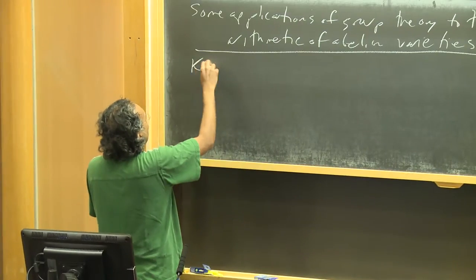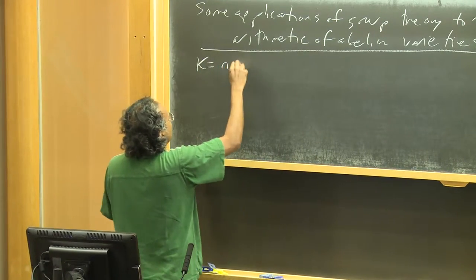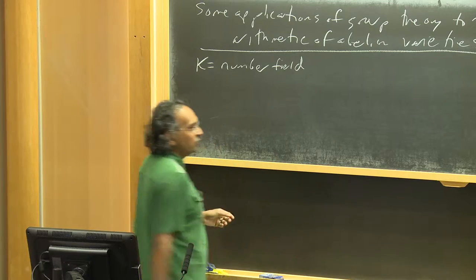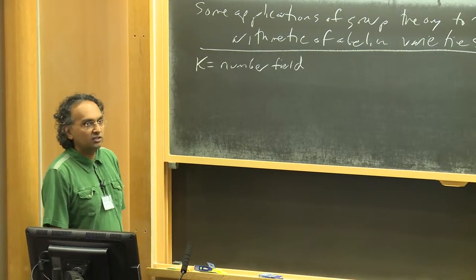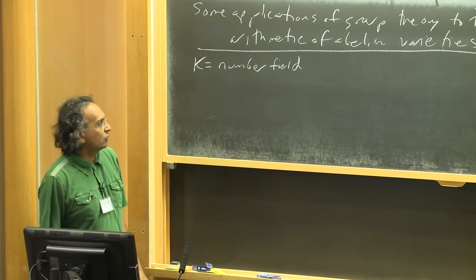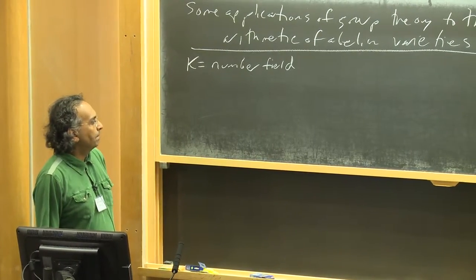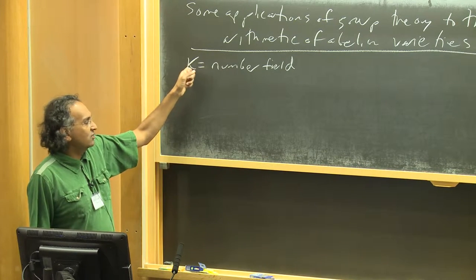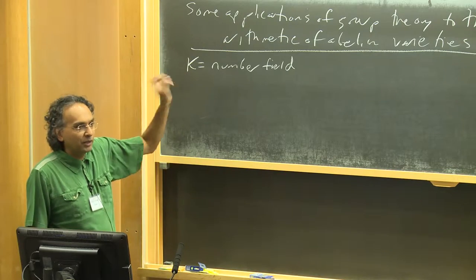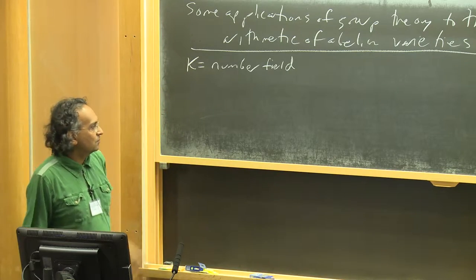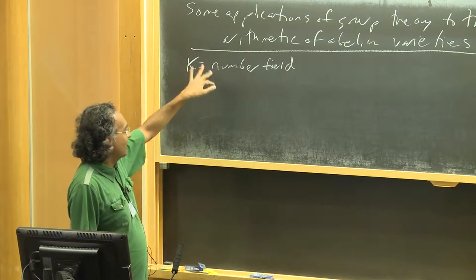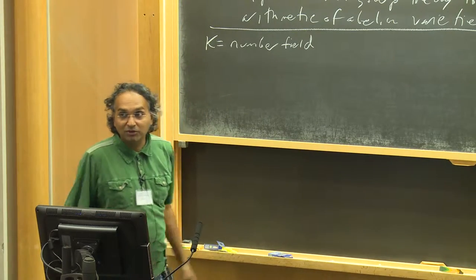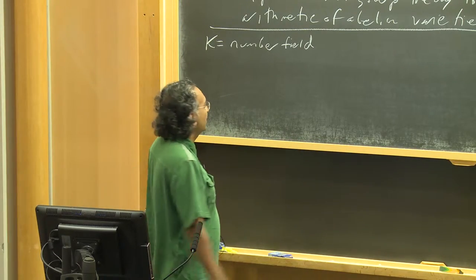So k throughout this talk will be a number field, so it will be some finite extension of the field of rational numbers. A lot of what I'm going to say makes sense when taking k to be the rational numbers, but we'll see very soon that I need to consider more general k in order to be able to make some statements.